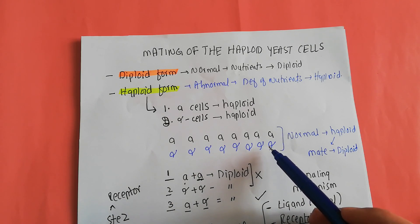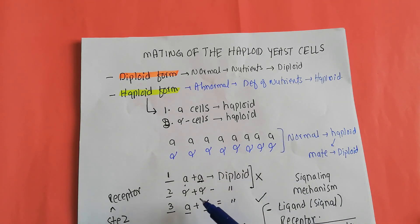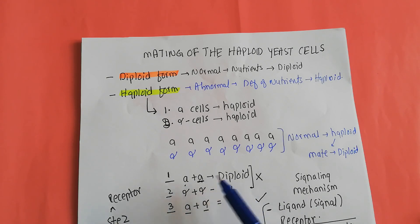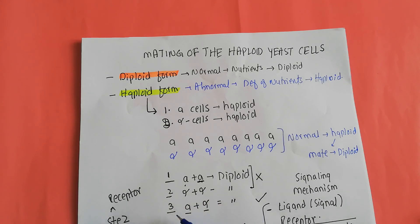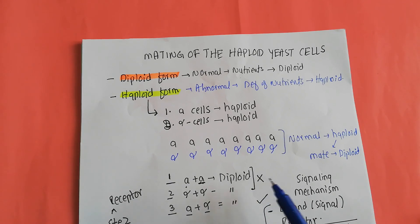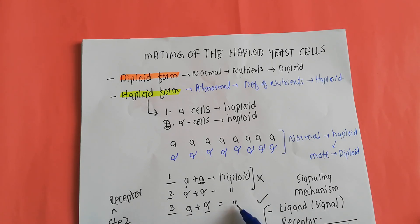Theoretically there can be three possibilities: an A cell interacts with an A cell, an alpha cell combines with an alpha cell, or an A cell combines with an alpha cell to give rise to a diploid form. However, the first two options are not executed. Only the haploid A cell will combine with the haploid alpha cell to give rise to diploid cells.